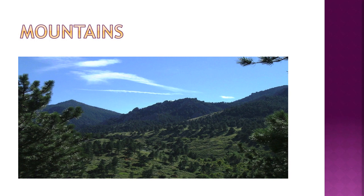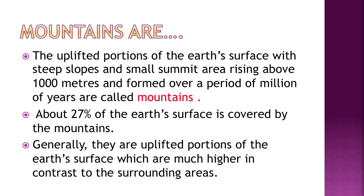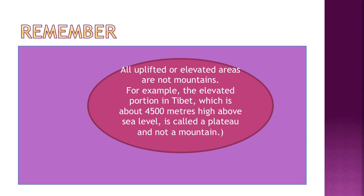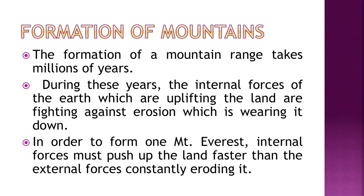Mountains are the uplifted portions of the earth's surface with steep slopes and small summit area, rising above 1,000 meters, formed over millions of years. About 27% of the earth's surface is covered by mountains. Not all elevated areas are mountains — for example, the elevated portion in Tibet, about 4,500 meters above sea level, is called a plateau, not a mountain.